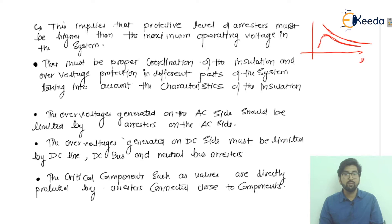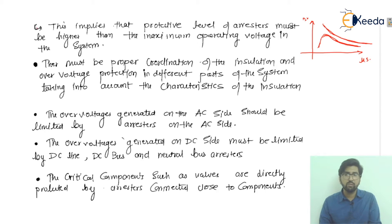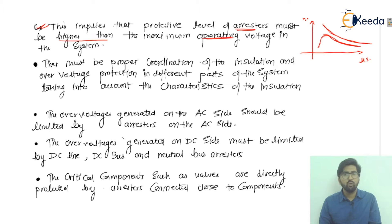This is the representation of insulation coordination. The protective level of the arrestors must be higher than the maximum operating voltage in the system, so it can easily detect fault conditions.